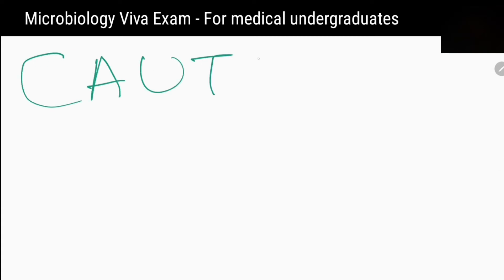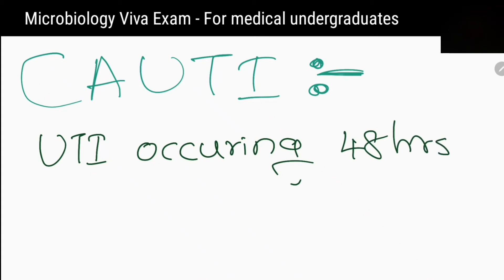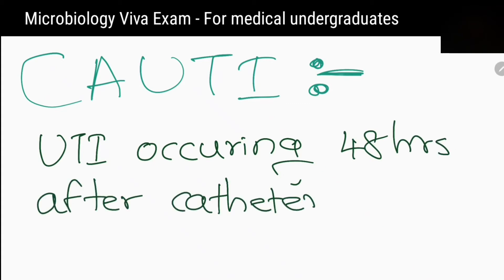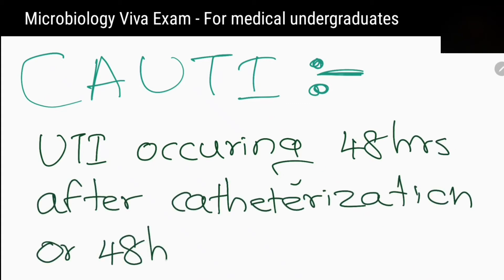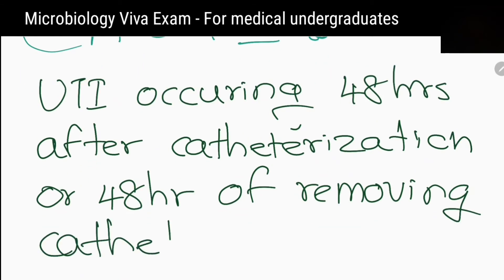How can you define catheter-associated urinary tract infection? Urinary tract infection occurring 48 hours after catheterization, or within 48 hours of removing the catheter.